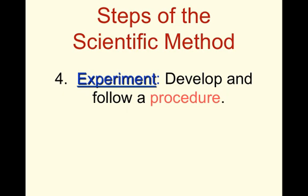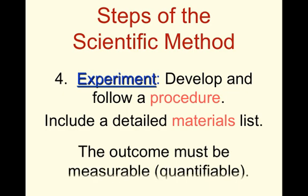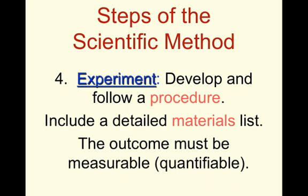Then you develop an experiment. This can be the difficult part because you've got to develop the experiment just right — we'll go through the steps. The experiment is your procedure. You've got to develop a materials list with all the things you're going to need in order to run the experiment. The outcome must be measurable or quantifiable — that is, you should be able to give a quantity of data.